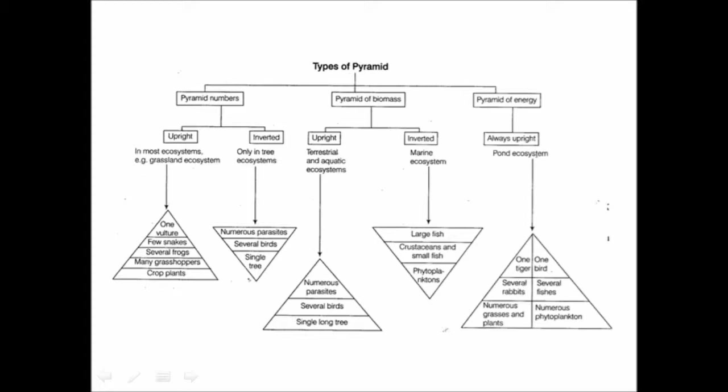It could be even more inverted than that. You could have a single tree being fed on by a lot of caterpillars. And the caterpillars are then fed on by birds. And so then you start to get more of a diamond-shaped pyramid.